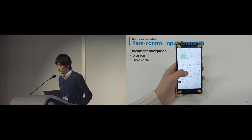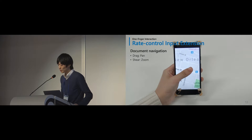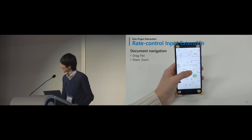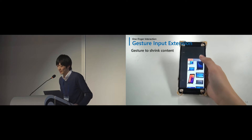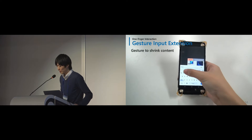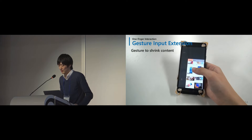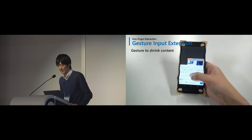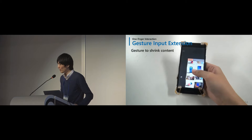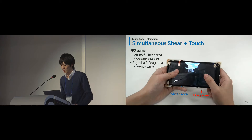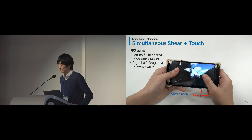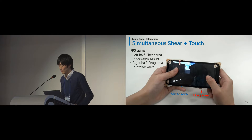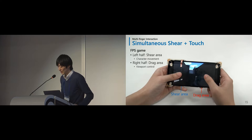Shear force input can be mapped to zooming operation, which offers smooth mode switching between scrolling and zooming with one finger. Shear Seat also enables gesture input extension for triggering specific actions. This example shows a gesture to shrink the content in order to reach the upper area of the screen, and this gesture can be triggered anywhere on the screen.